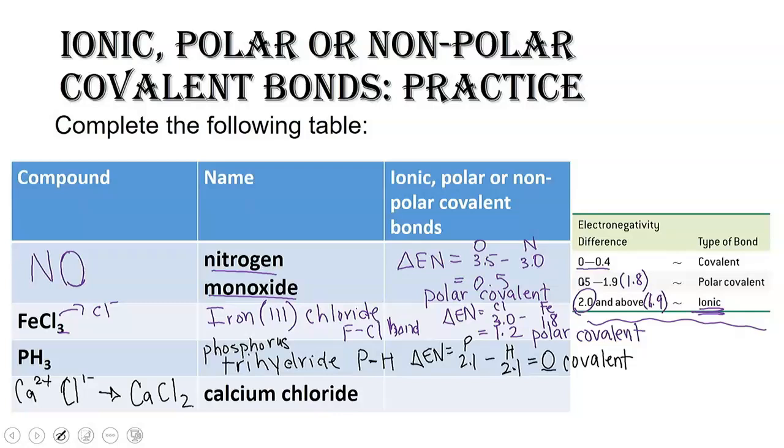And we want to know if that CaCl bond is ionic, polar, or covalent. I mean, iron(III) chloride was not ionic. Is this one going to be ionic? Now, let's look at the electronegativity difference. All right. So for this one, chlorine is 3.0. And calcium is 1.0. And we get a difference of two. So this is an ionic bond. The calcium chloride bond is ionic. So we can also say that calcium chloride is an ionic compound.